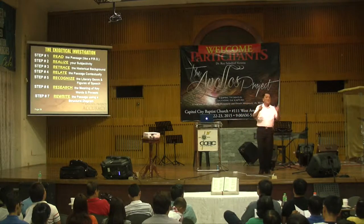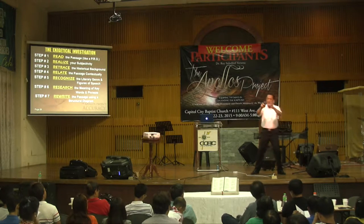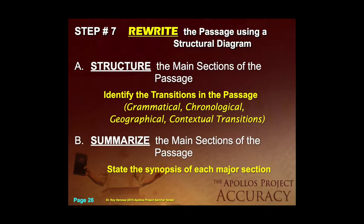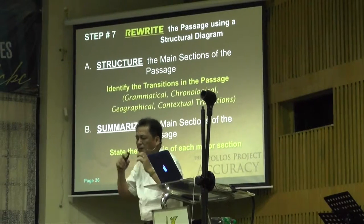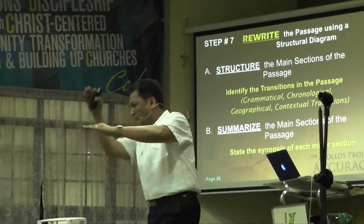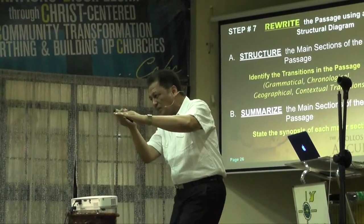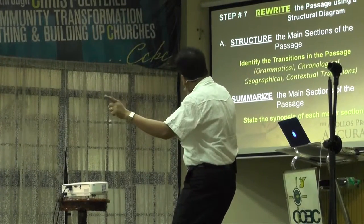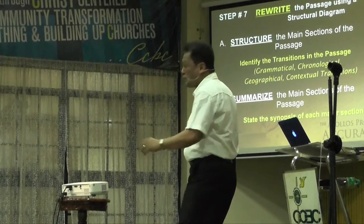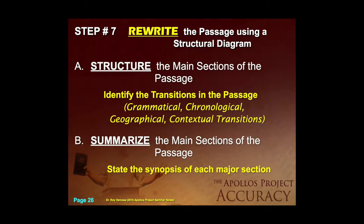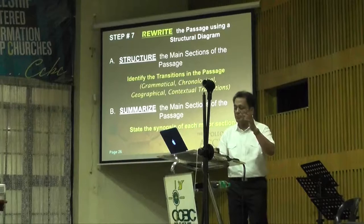But when you have a poetic material or an epistle, you can rewrite a passage using a structural diagram. You need to identify the transitions in the passage — this is very important. Transitions can be subtle, like the transition from salvation to service in the parable of the laborers. There are transitions in grammar, chronology, geography, or contextual transitions. Then you summarize the main sections and state the synopsis of each section.